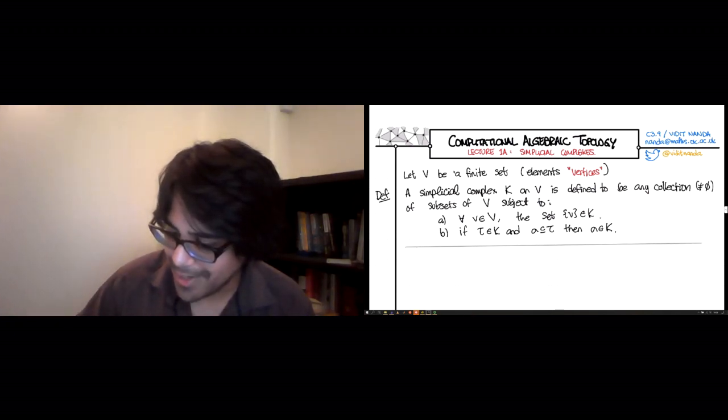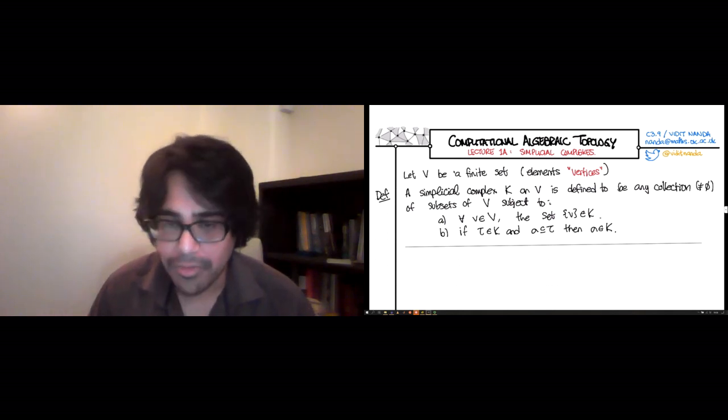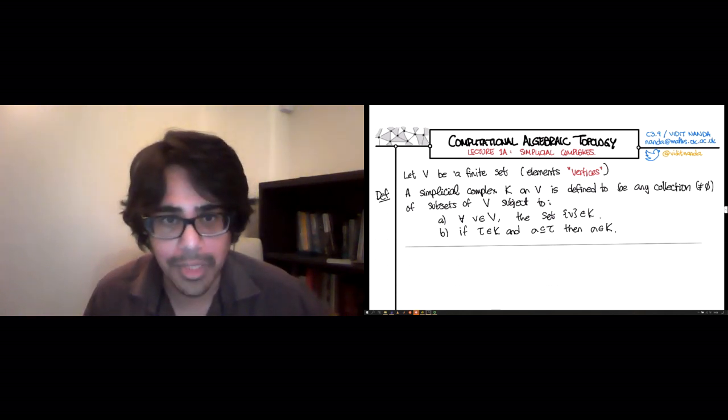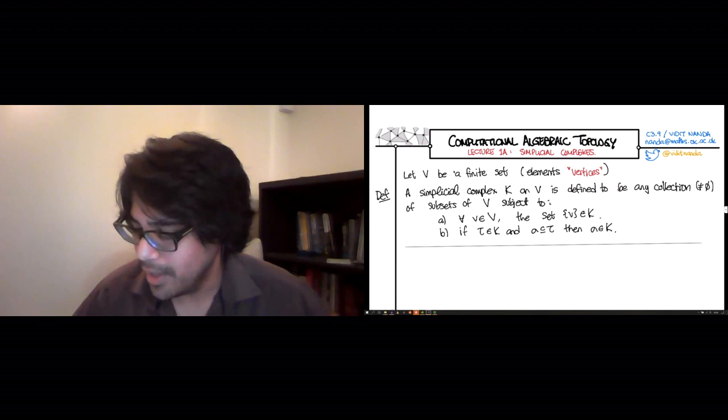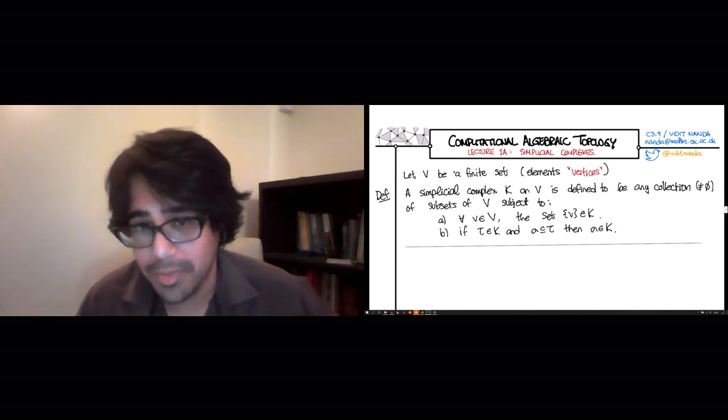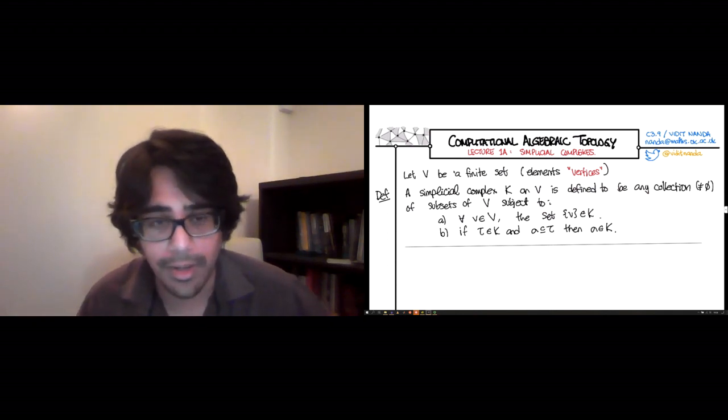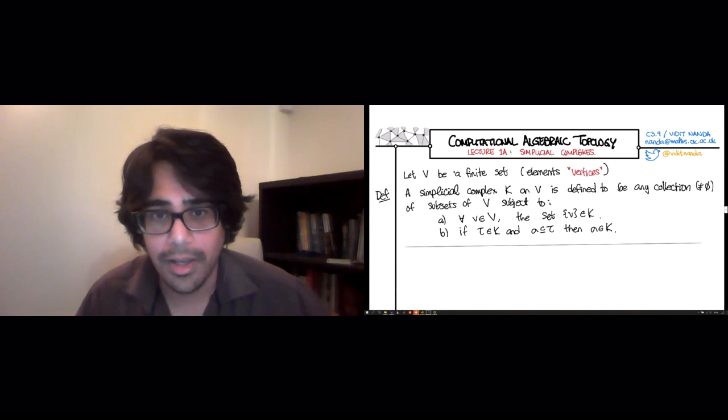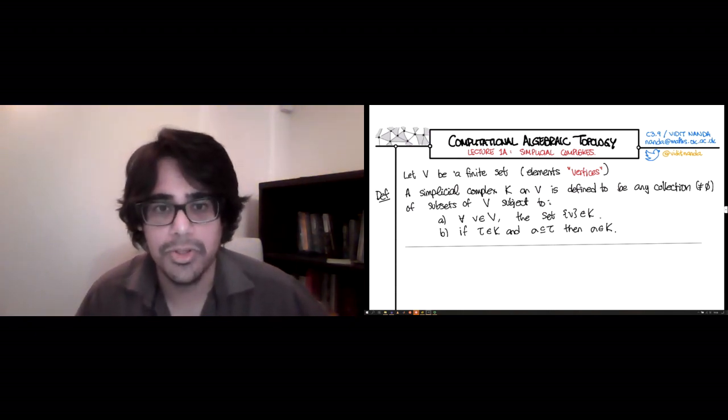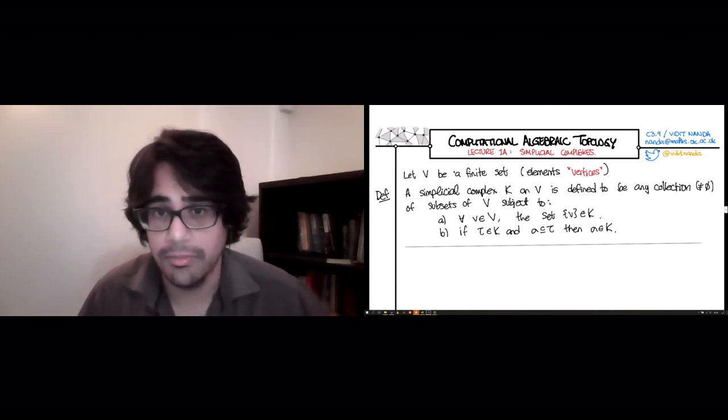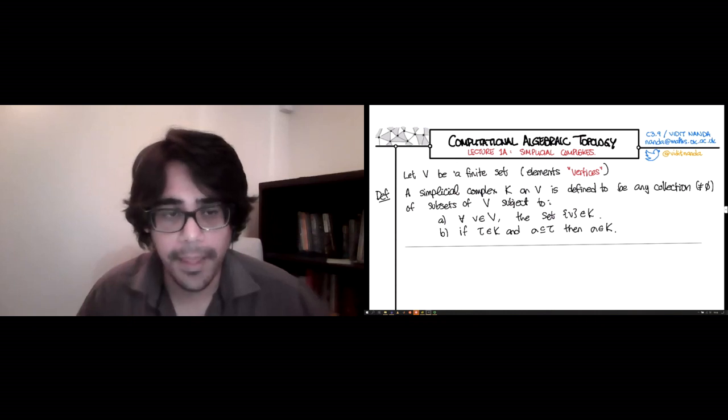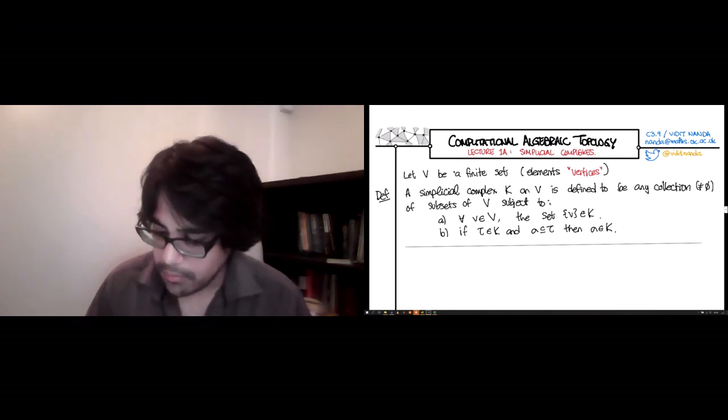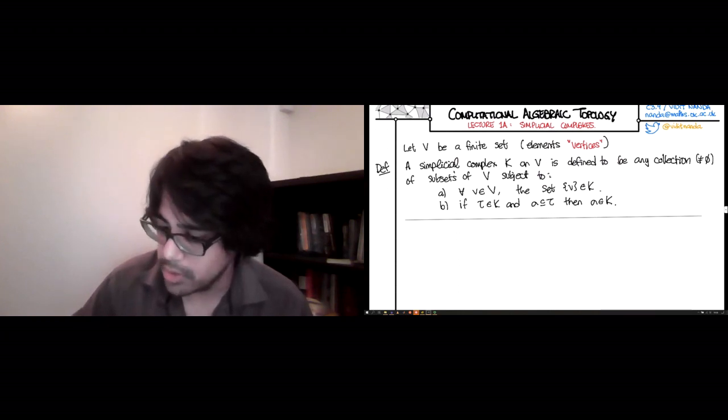There's a lot of interesting material hidden behind these two rules. There's more interesting material hidden behind the second rule than behind the first one. If you had an object of this type that did not satisfy the first rule, then you could just build a simplicial complex on a smaller V so that all the singletons were included.